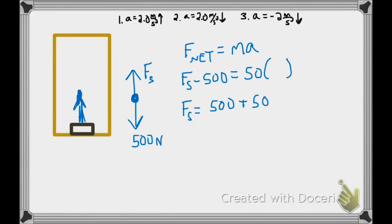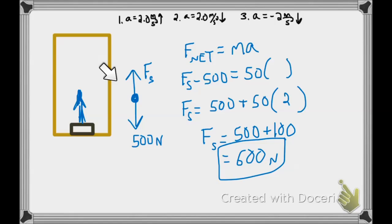So in our first example, where the acceleration is going to be 2 meters per second squared up, that's the motion of the elevator, but because the student and the scale are in the elevator, they will have the same motion. So when we add an acceleration of plus 2 for the student, we have the force of the scale reading 500 plus 100 or 600 Newtons.